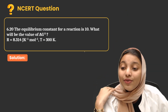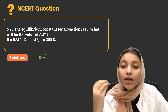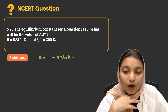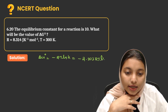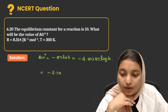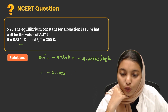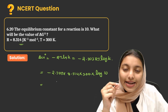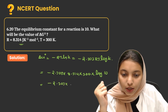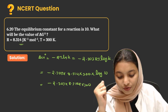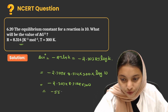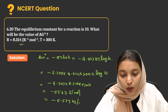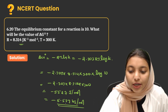The equilibrium constant for the reaction is given; find delta G naught. Using the equation delta G naught = minus RT·ln K = minus 2.303·R·T·log K = minus 2.303 × 8.314 × 300 × log(10). Since log 10 = 1, delta G naught = minus 2.303 × 8.314 × 300 = minus 5527 joule per mole or minus 5.527 kilojoule per mole.